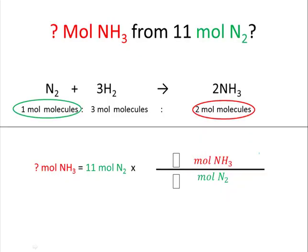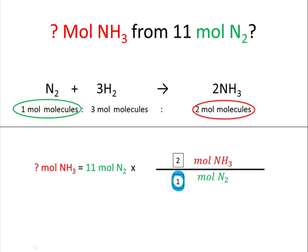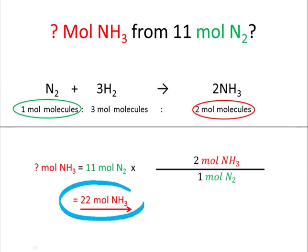How many moles of ammonia will be formed from 11 moles of nitrogen? The unit factor has moles ammonia at the top, moles nitrogen at the bottom. Every 1 mole of nitrogen reacts to form 2 moles of ammonia. 11 times 2 divided by 1 equals 22 moles ammonia.